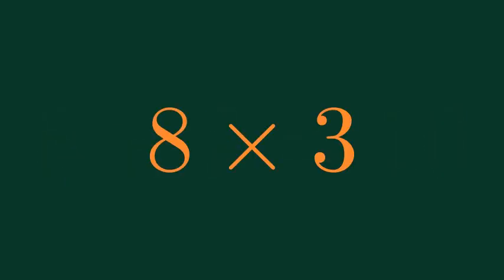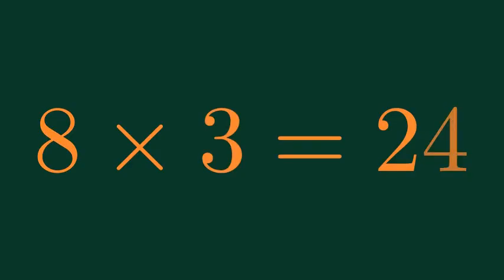What is 8 times 3? 8 times 3 is equal to 24.